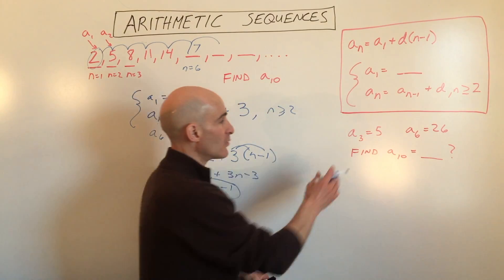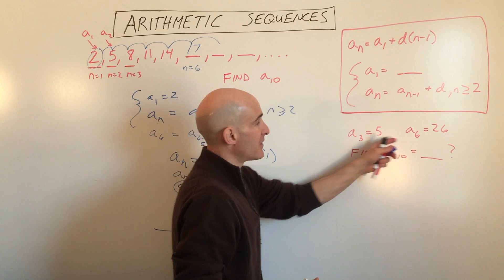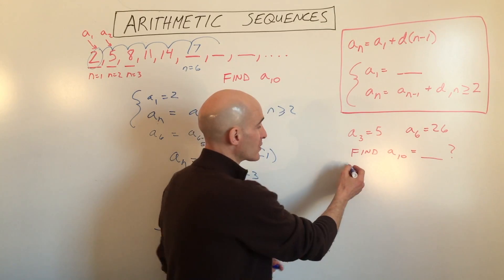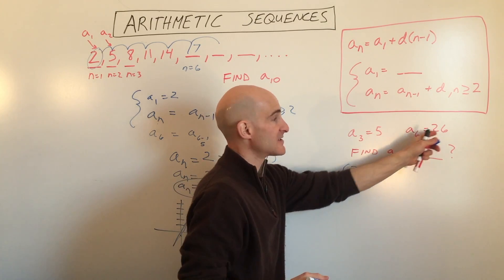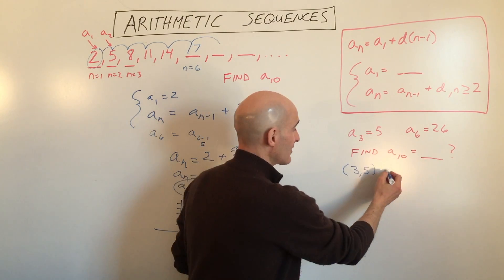So let's go over to this one now. And what we're going to do is instead of thinking this as two points in our sequence, we're going to write these as coordinates. We're going to say 3, 5 and 6, 26.